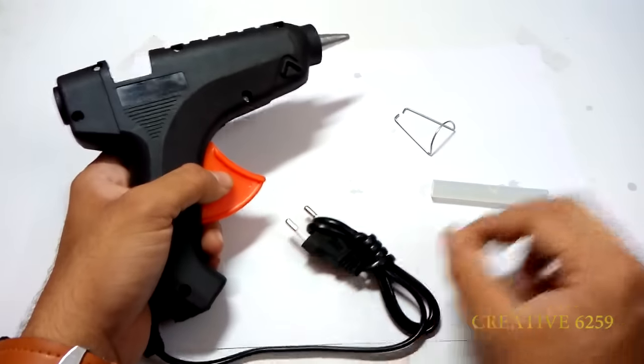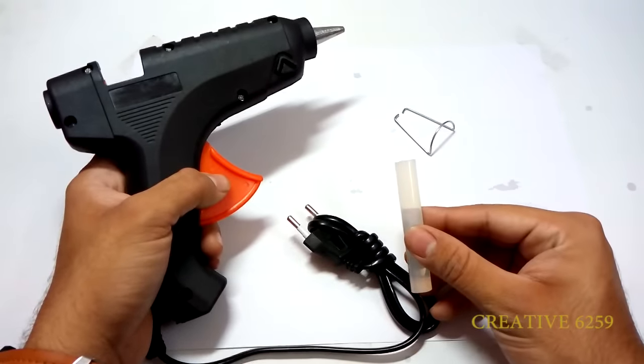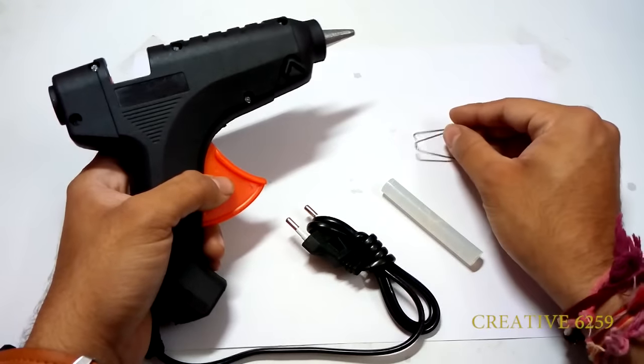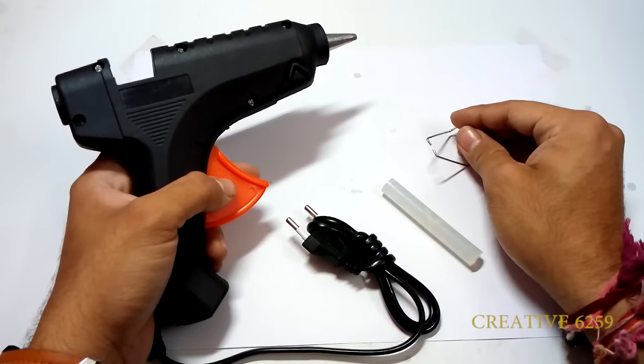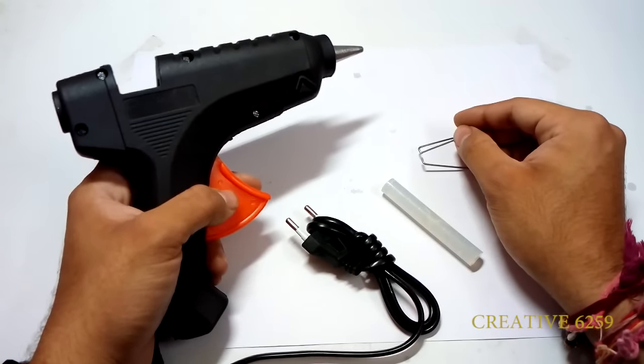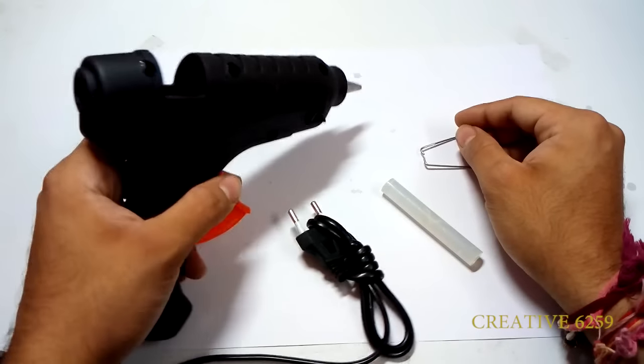This is what we got inside the box: here is a glue gun with approximately 1 meter long cord, small glue stick which we got inside the box, and this is a small stand for putting the hot gun over the table.